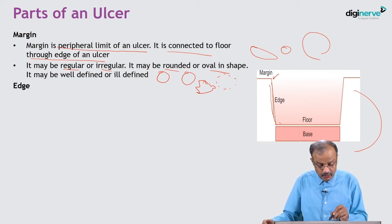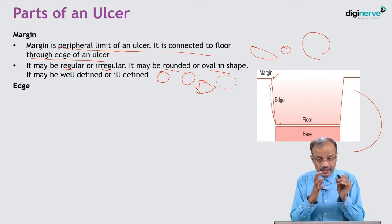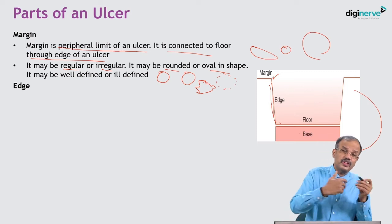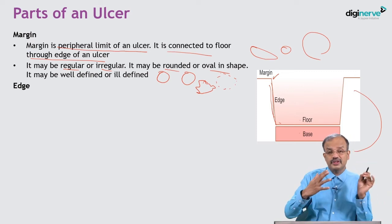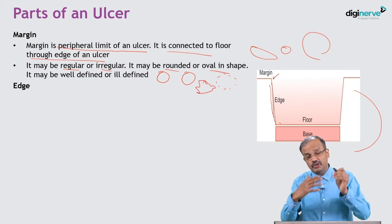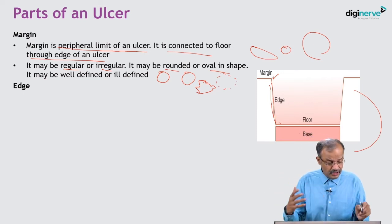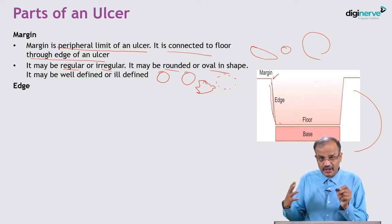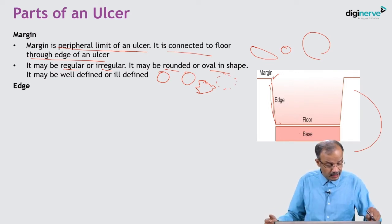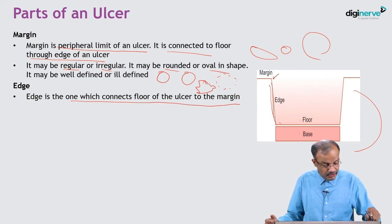Next is edge. The junction from normal tissue at the margin inward to diseased tissue begins through the edge. Edge is between the margin and the floor of the ulcer - it is a connecting bridge. Edge is the one which connects the floor of the ulcer to the margin.